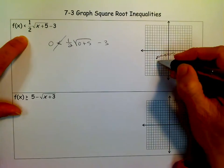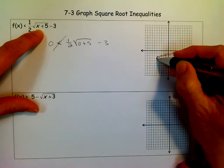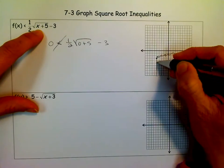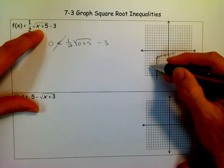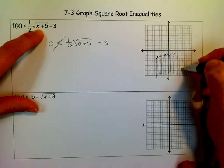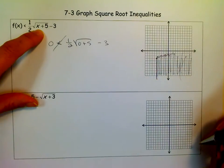And because of my domain error, remember, underneath the radical can never be negative. I have this line right here that I can't cross. It's this vertical line. So when I shade, I can't shade to the left of that. I can only shade this way. So wherever that curve ends up, I would shade like that.